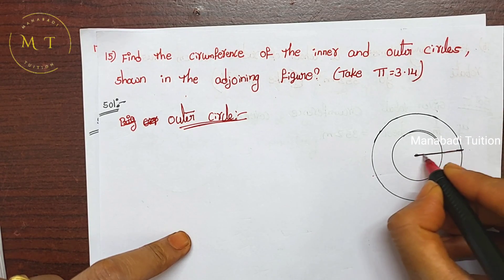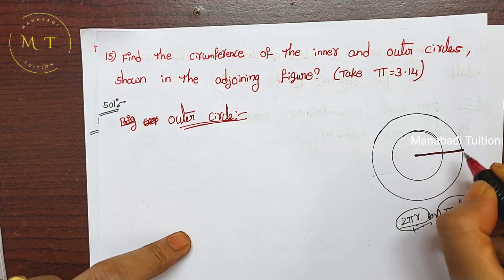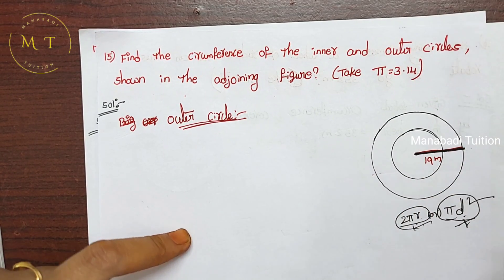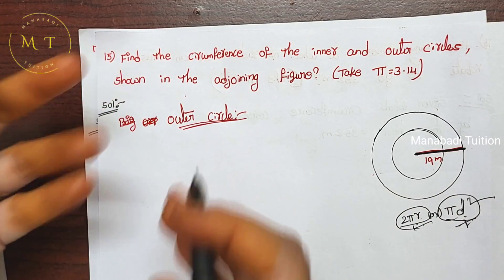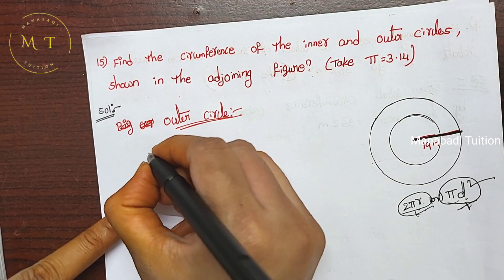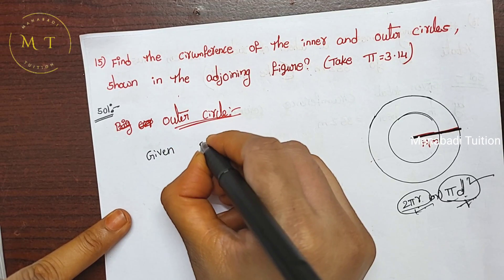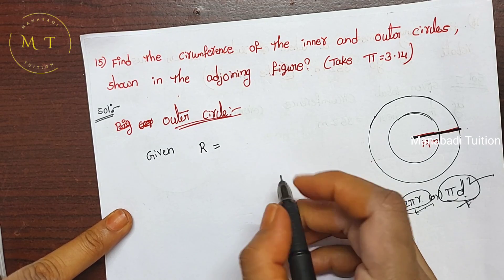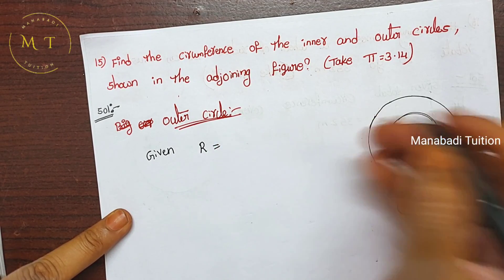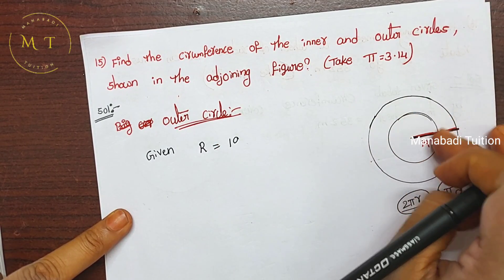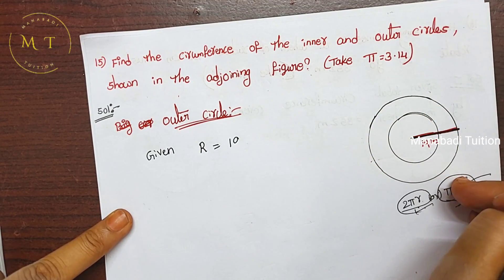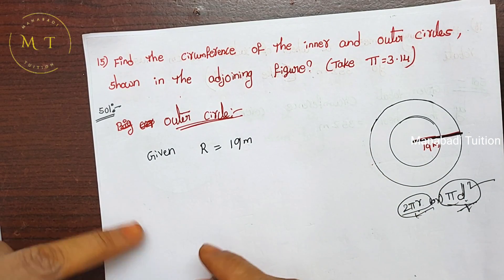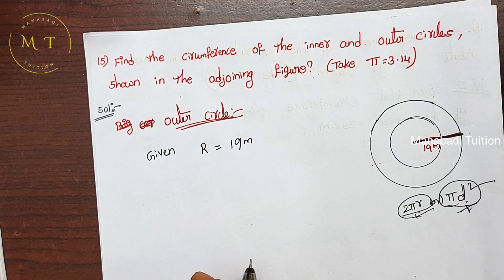We will check the radius. The total length is 19 meters. So the given radius — we will take capital R for the outer circle and small r for the inner circle. So the circumference formula is 2πr.